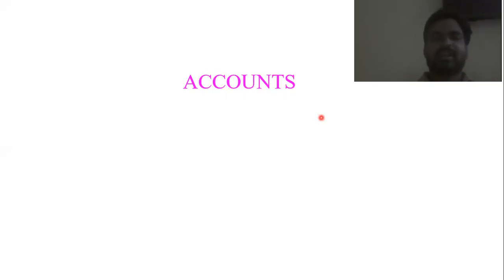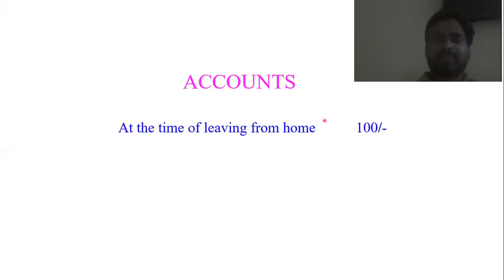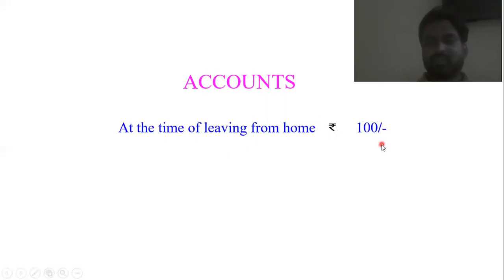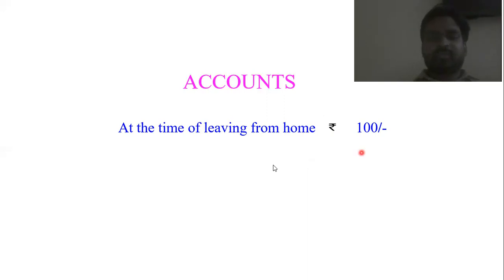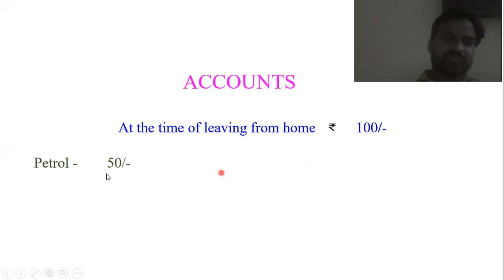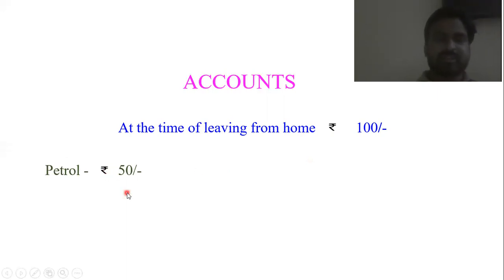Let us have an example: at the time of leaving from our home, we have rupees 100 with us. We have spent rupees 50 for petrol. So from these 100 rupees, we have spent rupees 50 for petrol. What is the balance amount that we have with us? 50 rupees.